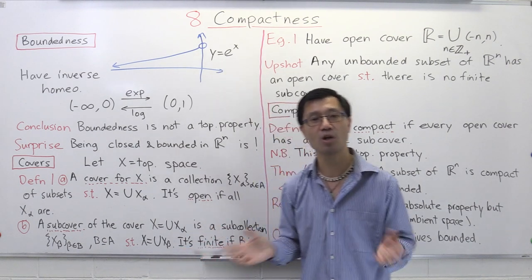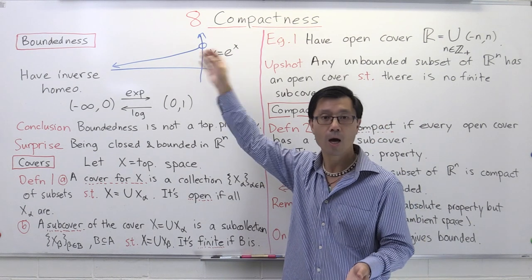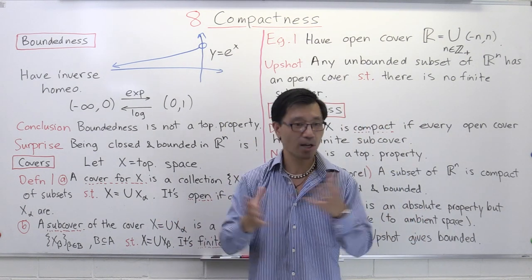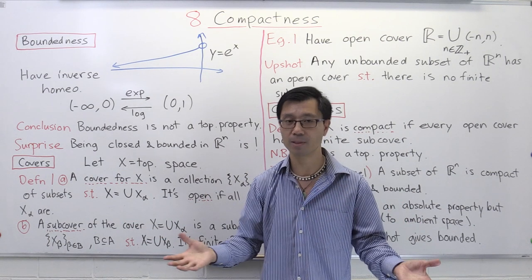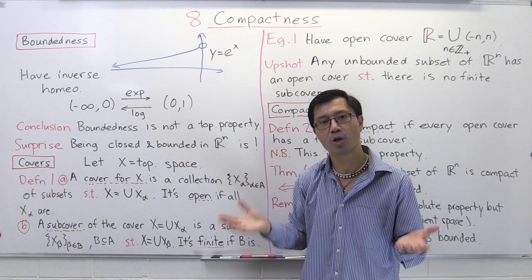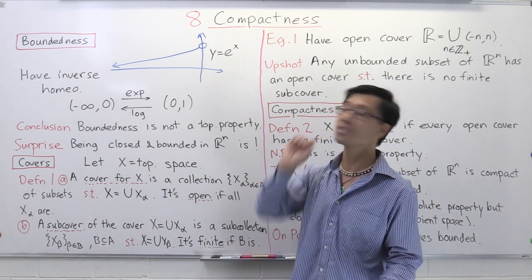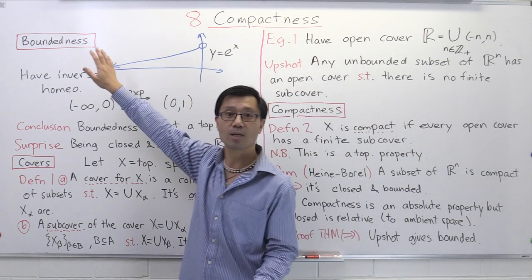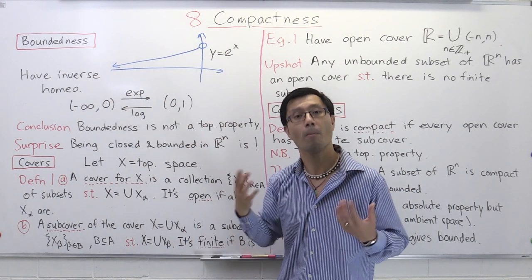In a metric space, you have a notion of a distance, but in a topological space, you do not. So certainly in a topological space, you can't talk about notions such as a set having a certain diameter. But you can ask whether you can think about the notion of being bounded in some way. So let's have a look at a little example here and see what we can say about boundedness from a topological point of view.